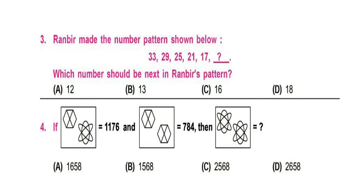Question 3. Drenbir made the number pattern shown below: 33, 29, 25, 21, 17. Which number should be next in Drenbir's pattern?